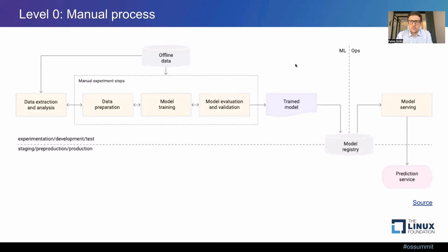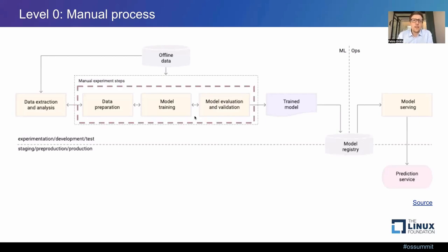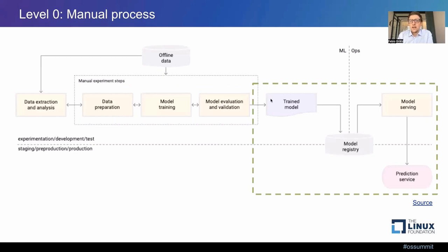Another problem is that we only deploy prediction servers with no way of monitoring what the model is doing, so we wouldn't even know if the model is decaying. To make the process more mature, we first have to automate the steps of data preparation, model training, and evaluation into one pipeline that does all of that automatically. We also have to automate the deployment process so that we don't have so many manual steps and aren't just throwing work over the wall to a different team.